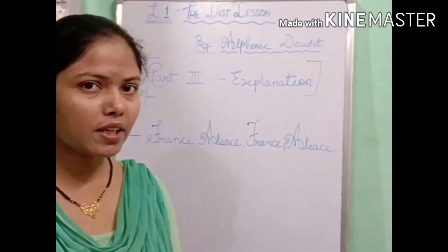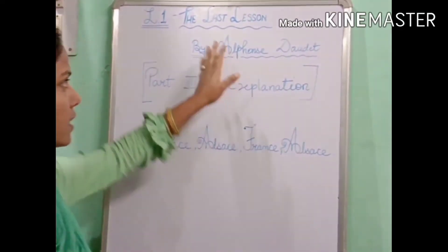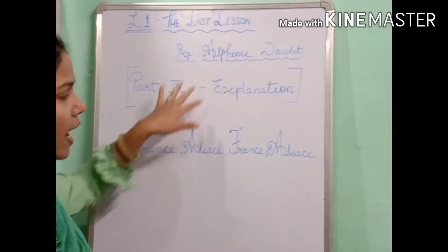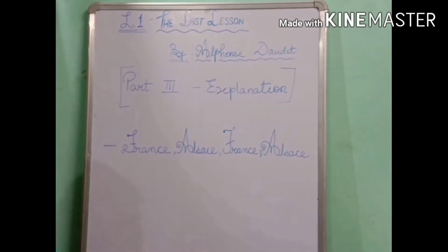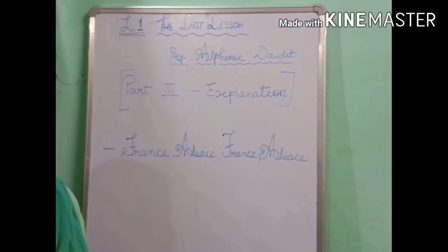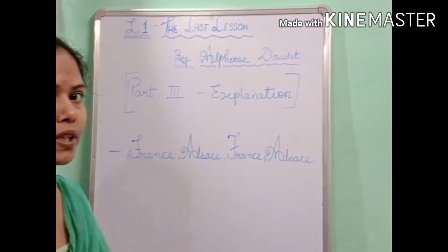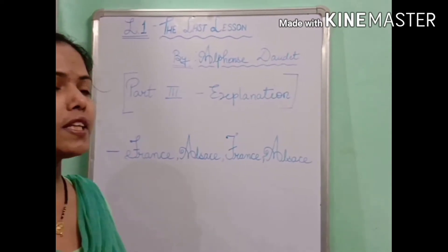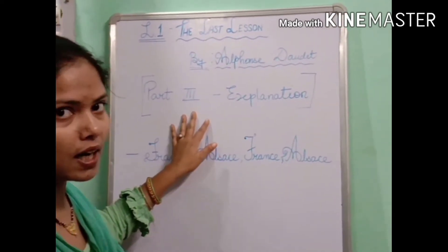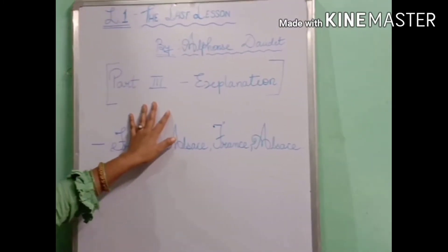Hey students, I am here with the explanation of lesson 1, the last lesson written by Alphonse Daudet. I have already explained much about this chapter in part 1 and part 2. Today I am going to discuss all about this chapter. We are going to end this chapter in part 3, which is the last part of the explanation.